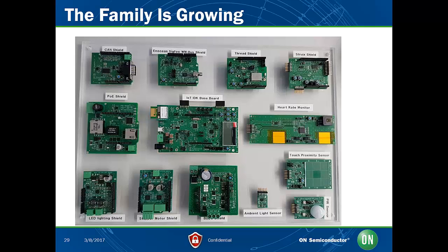Here is the current set of physical shields offered by On Semiconductor, starting with a brushless DC motor control shield, heart rate monitor, Struix shield for interfacing with medical sensors, a 2.4 gigahertz thread shield that is also capable of supporting the Zigbee protocol or any protocol based upon the 802.15.4 MAC, a PoE shield which can be used to implement applications like Ethernet controlled lighting, and a Canon shield for industrial and automotive communications.